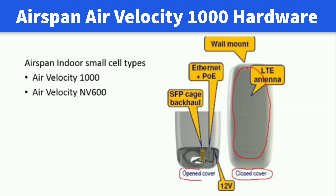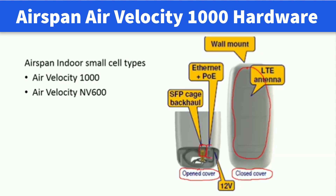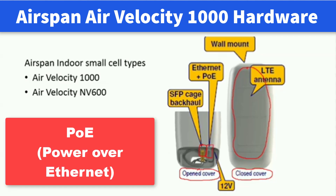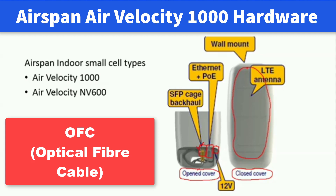In the open cover small cell, you could see three ports. The SFP port, which stands for Small Form Factor Pluggable port. The second one is Ethernet as well as POE port — POE stands for Power over Ethernet. The third port is for 12V DC power supply. The SFP port is connected to backhaul through an L2 switch, and this SFP port uses OFC, where OFC stands for Optical Fiber Cable.